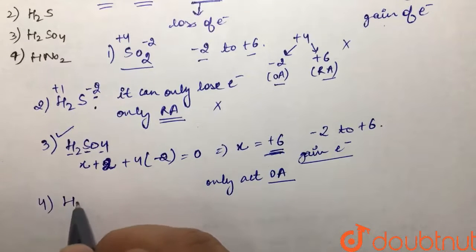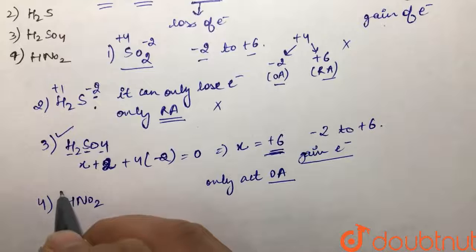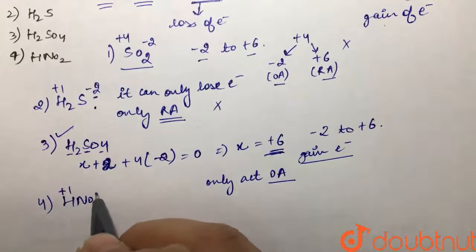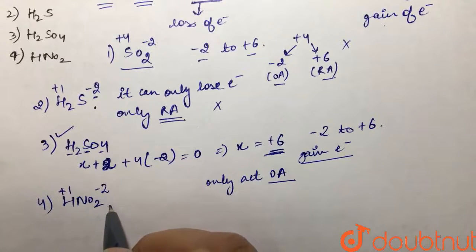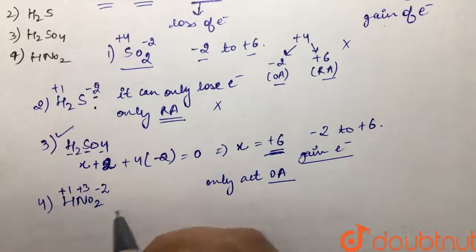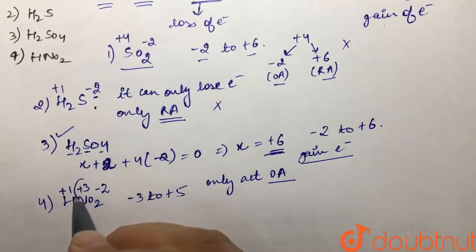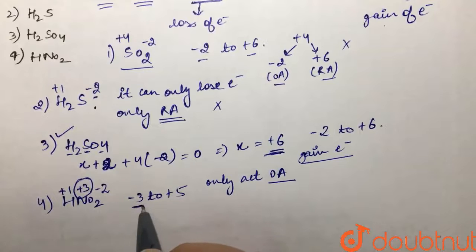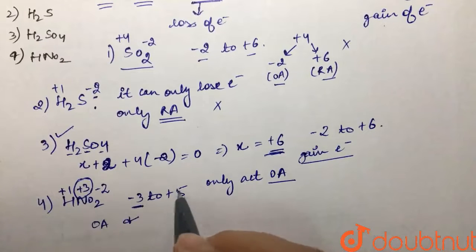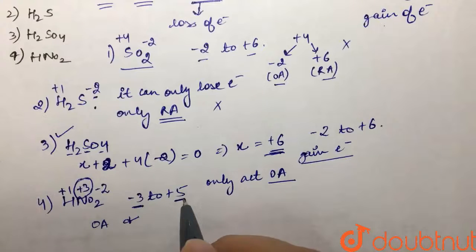For the fourth option, HNO₂: hydrogen is +1 and oxygen is -2, so nitrogen is +3. The possible oxidation states of nitrogen range from -3 to +5. Since nitrogen is at +3, it can go down to -3 (acting as oxidizing agent) or up to +5 (acting as reducing agent). So HNO₂ can act as both oxidizing and reducing agent — not our answer.